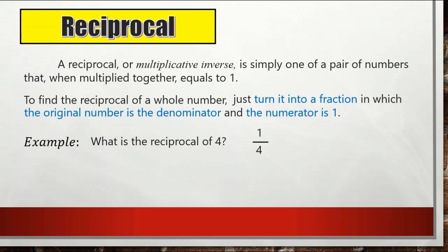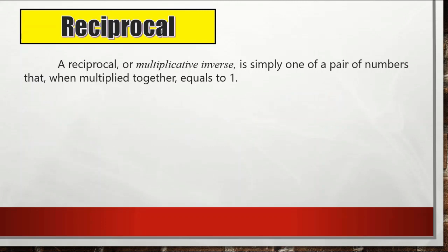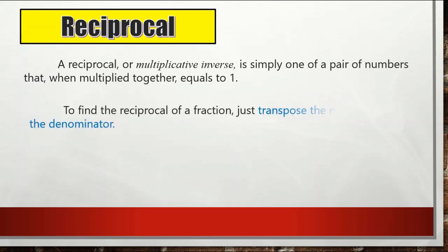So the reciprocal of four is equal to one-fourth. To verify: four over one times one-fourth equals four-fourths, which is simply one. To find the reciprocal of a fraction, we just transpose the numerator and the denominator.